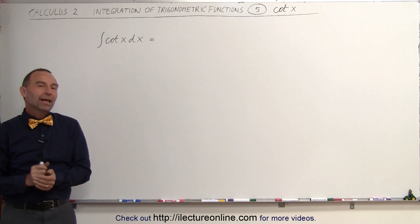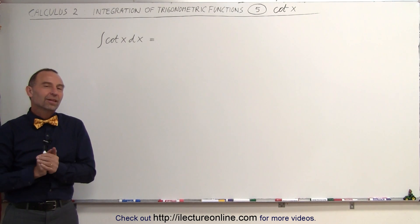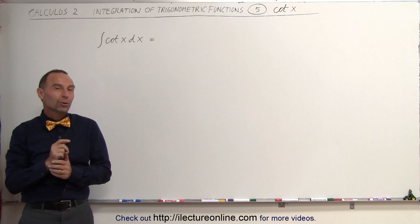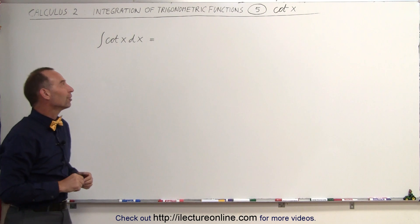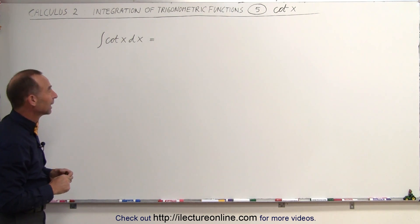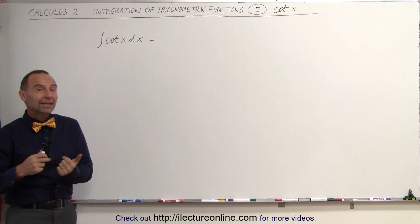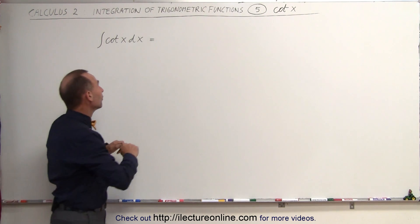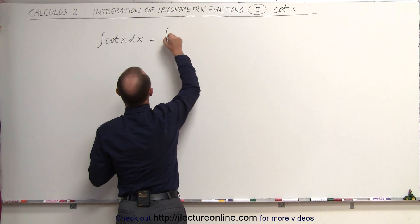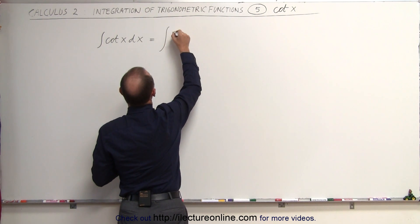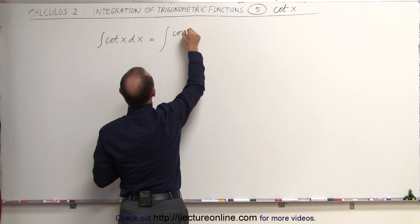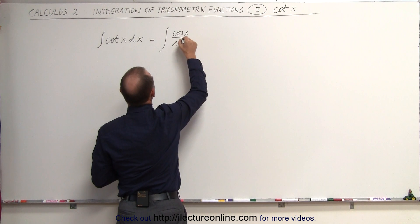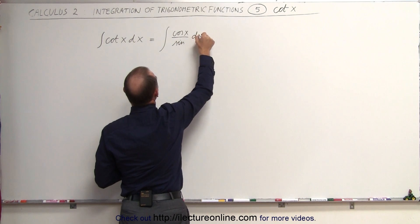Welcome to our lecture online. Now let's take a look and see how we find the integral of the cotangent of x. Just like with the tangent of x, we're going to write it as follows. This can now be written as the integral of the cosine of x divided by the sine of x, times dx.